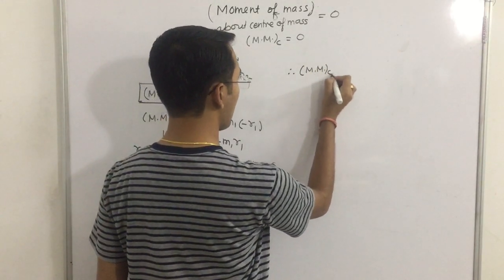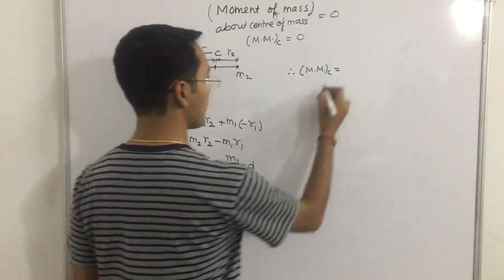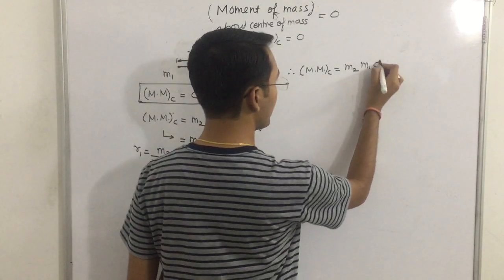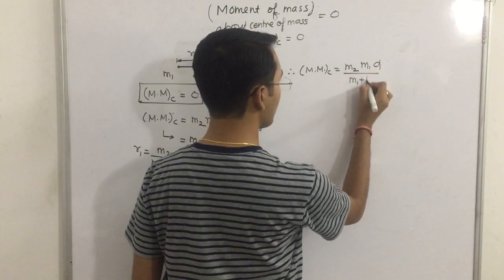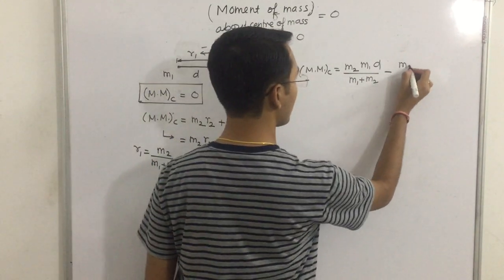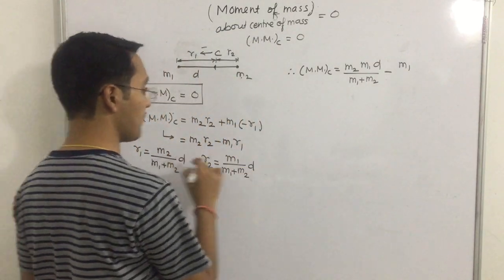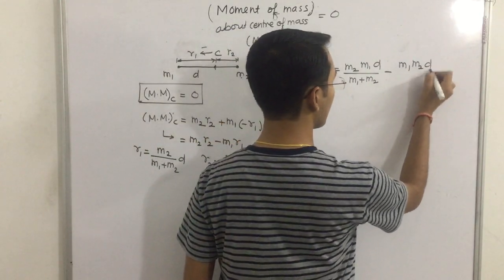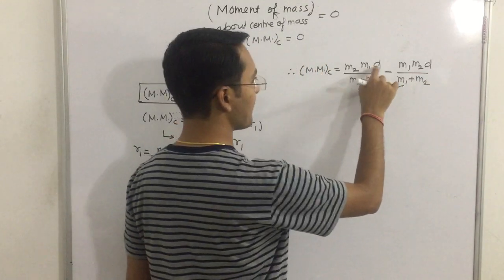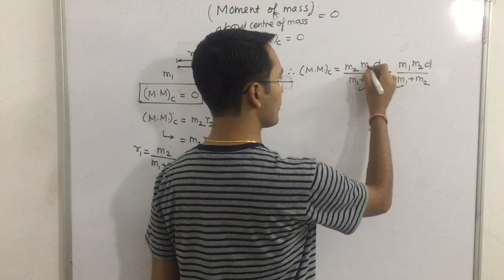Moment of mass about center of mass equals M2 times R2 equals M1 into D upon M1 plus M2, minus M1 into R1 equals M2 into D upon M1 plus M2.